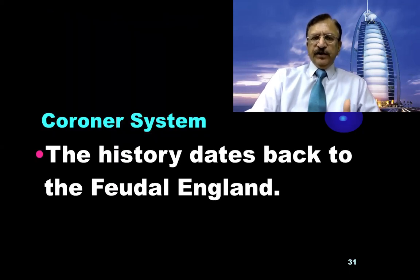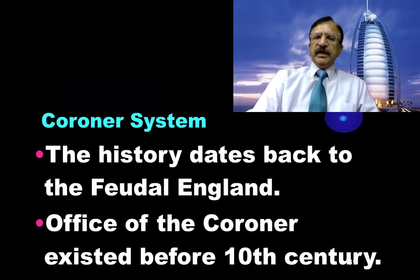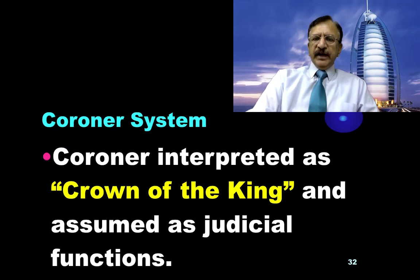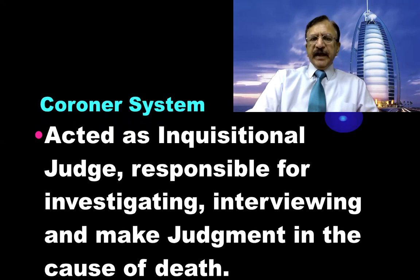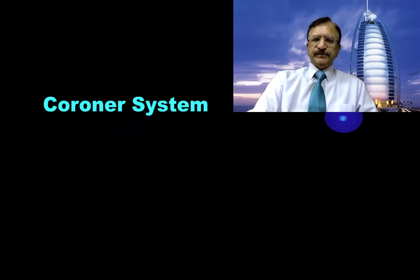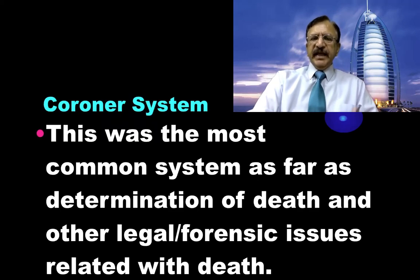The history of the coroner system dates back to feudal England law. The office of the coroner existed before even the 10th century. The coroner was interpreted as the crown of the king and assumed judicial functions, acting as an inquisitional judge responsible for the investigation, interviewing, and making a judgment in the cause of death. This was the most common system for the determination of death and other legal forensic issues related to death.